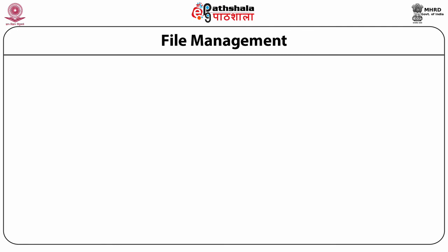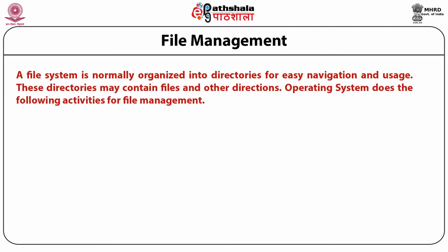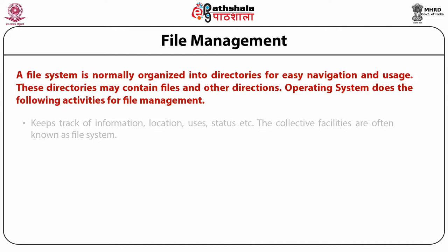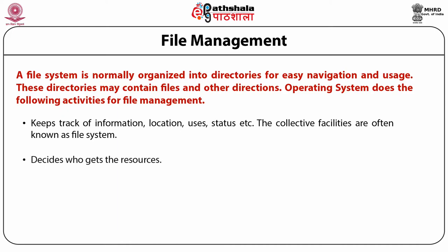Coming to file management: a file system is normally organized into directories for easy navigation and usage. These directories may contain files and other directories. The operating system keeps track of information, location, usage, and status — the collective facilities are often known as the file system. It decides who gets the resources, allocates the resources, and deallocates the resources.